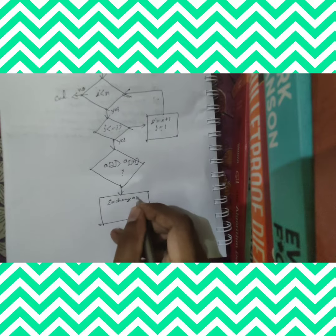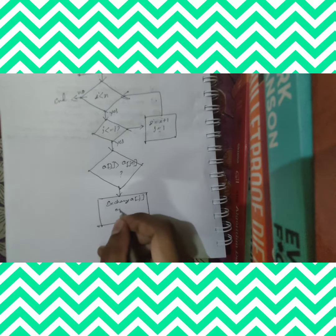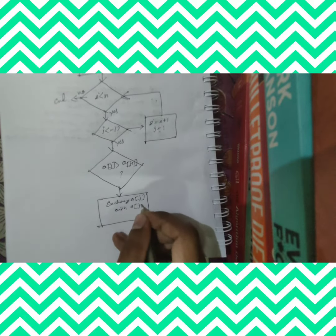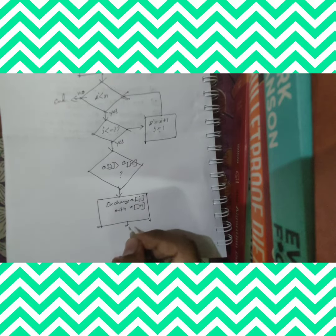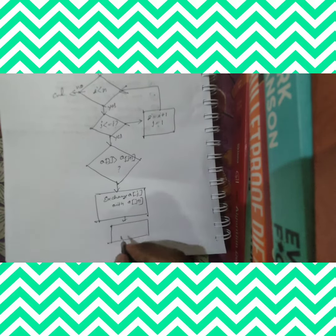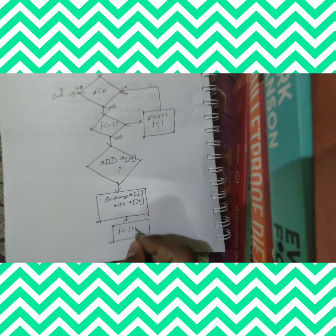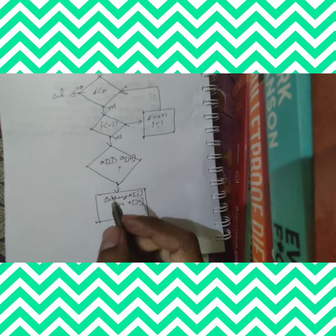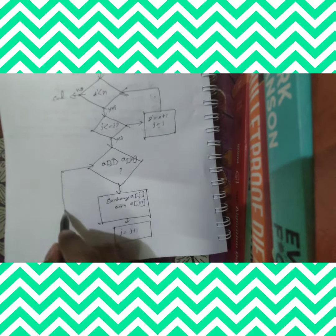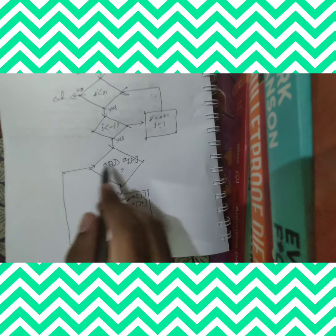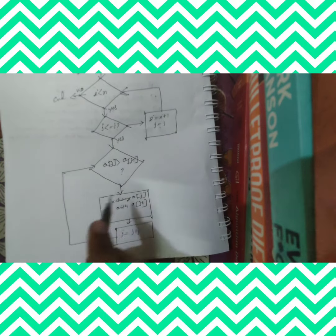Exchange a of j with a of j plus 1. Next, it is coming j equal to j plus 1. Okay, so it's coming from the j plus 1 to a of j, a of j plus 1.